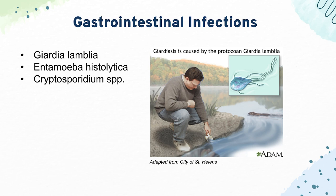Next, we have Giardia lamblia, which causes foul-smelling, fatty diarrhea, floating stools, and bloating — often from cysts in infected water. Then Entamoeba histolytica causes dysentery marked by bloody diarrhea, and can also cause right upper quadrant pain due to liver abscesses. And Cryptosporidium species causes watery diarrhea, usually in HIV and AIDS patients.